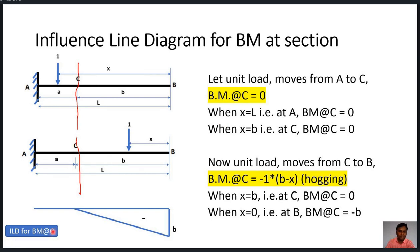We can now draw the influence line diagram for bending moment at C. When the unit load is at A, bending moment at C is zero and remains zero until the unit load reaches C. As the unit load moves from C to B, the bending moment varies from zero to −B, shown on the negative side because it is hogging. The ordinate at B is −B and at C it is zero, connected by a straight line.